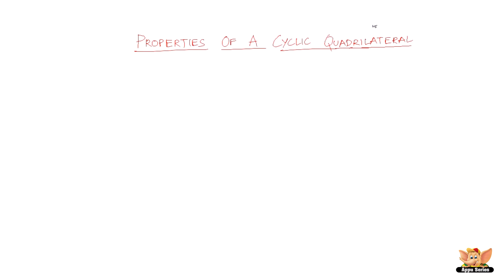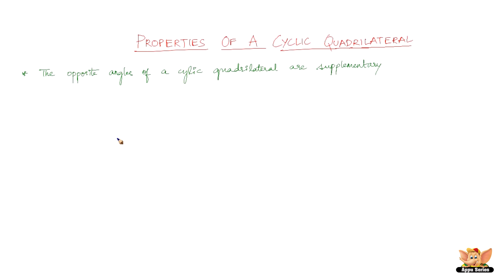In this video, let us look into the properties of a cyclic quadrilateral. The first property states that the opposite angles of a cyclic quadrilateral are supplementary. Two angles are said to be supplementary if they add up to 180 degrees, just recalling it for you.